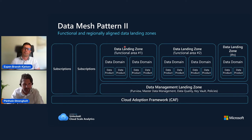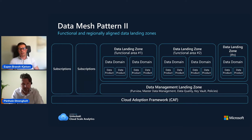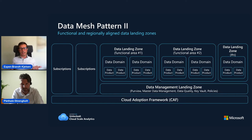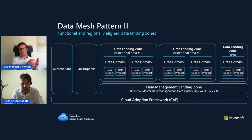Here you see on the screen different data landing zones. Could you explain why, and when to use such a pattern — is this for technical separation? This is absolutely my preferred and recommended pattern, because there are a lot of things to take into consideration when you design the architecture. The key is to use what we like to refer to as subscription democratization — to use the subscription as the method to enable that scaling. One aspect could be data sovereignty.